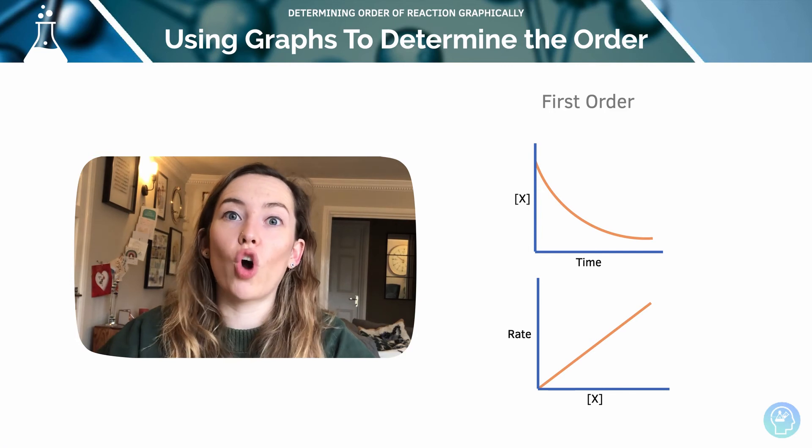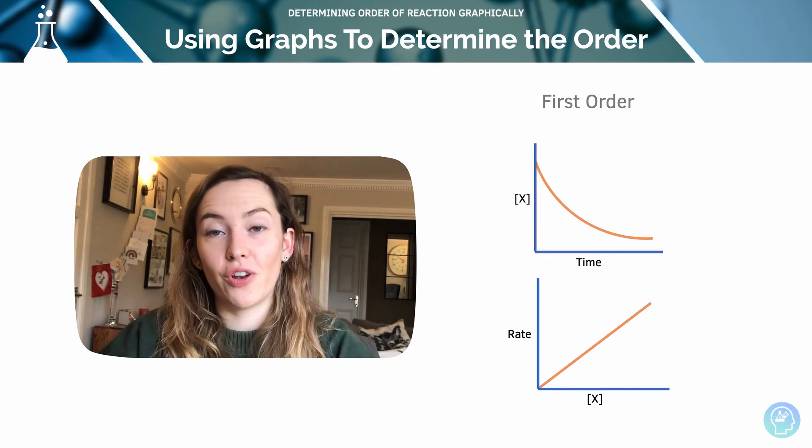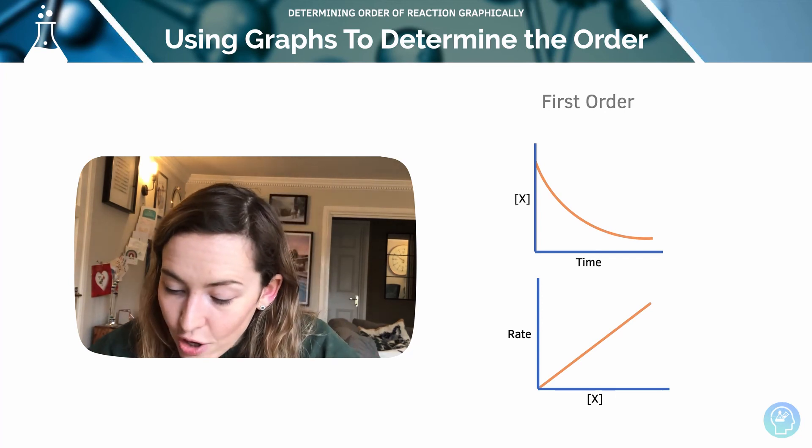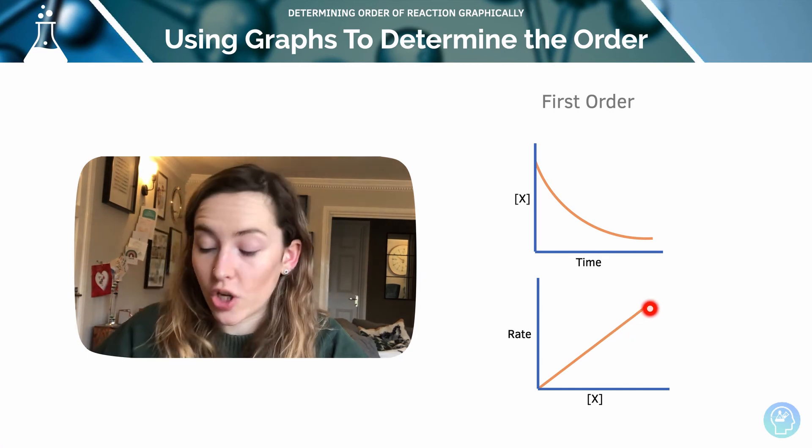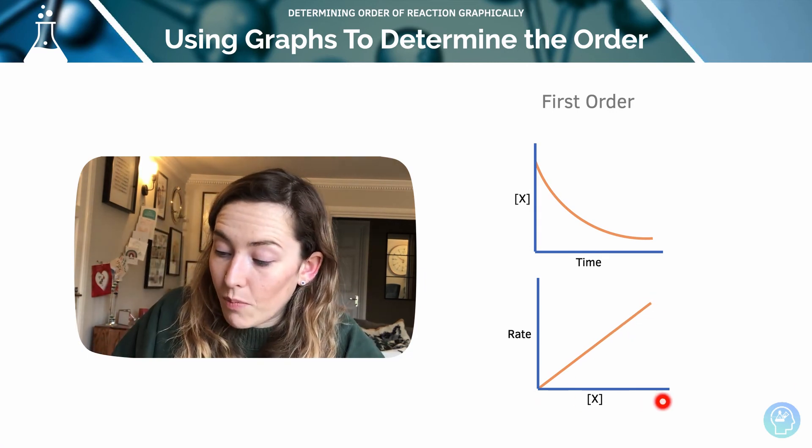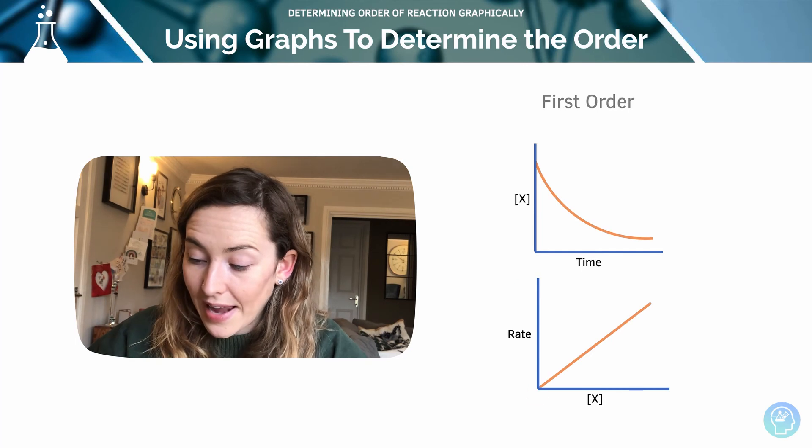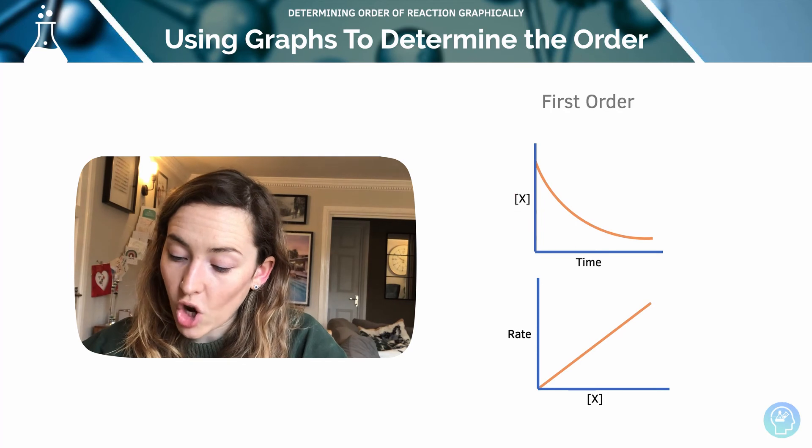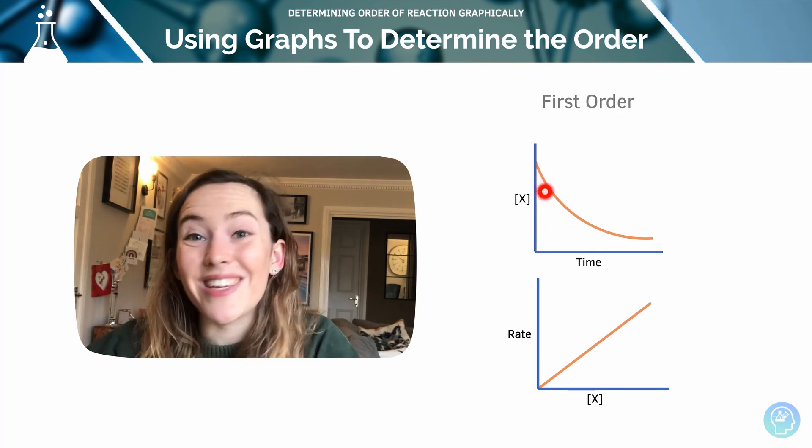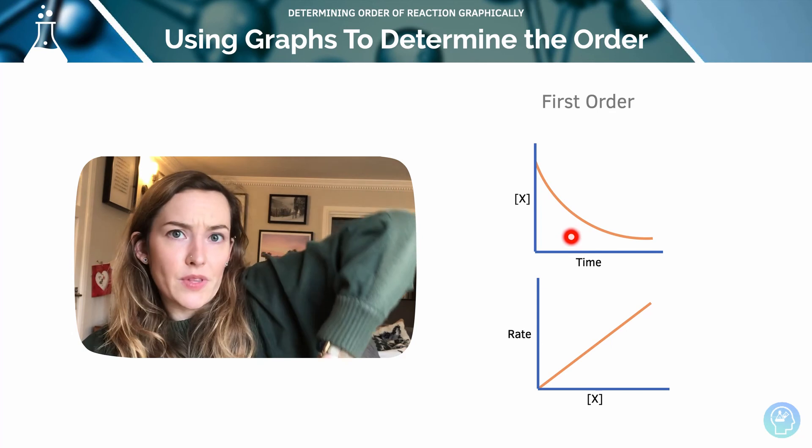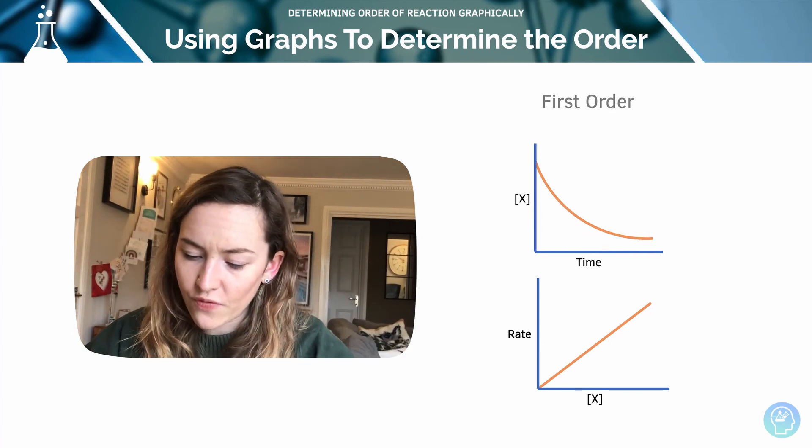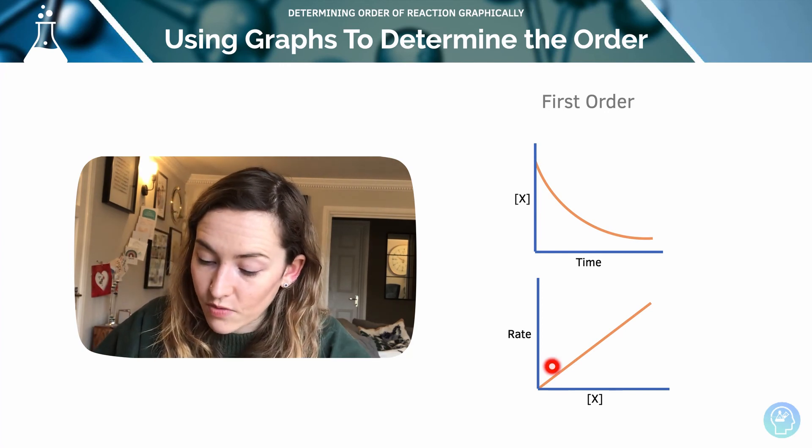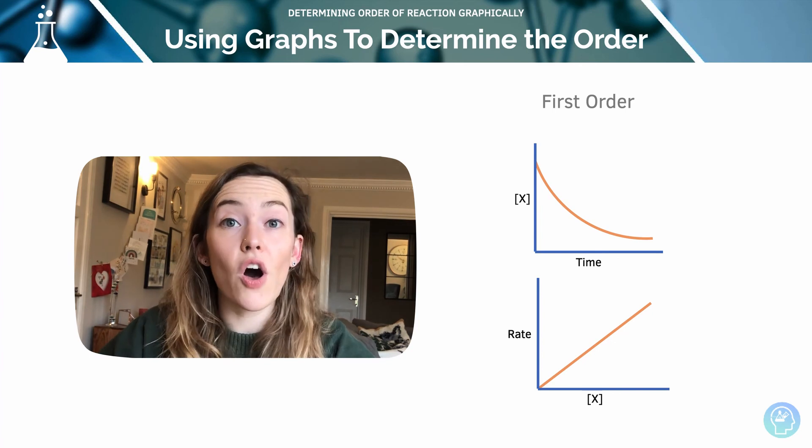Here we've got two graphs showing what a first order reaction looks like with respect to the reactant being investigated. So we can see that rate increases proportionally with the concentration. So as we increase my x-axis, my y-axis increases at exactly the same. So we've got that dead straight line. But in terms of the concentration versus time graph, how that's going to look is the curve with a decreasing gradient. So very steep at the start and decreasing in my concentration versus time graph. So a straight line through the origin, that's what we're looking for in terms of our rate versus concentration. That tells us it is first order.